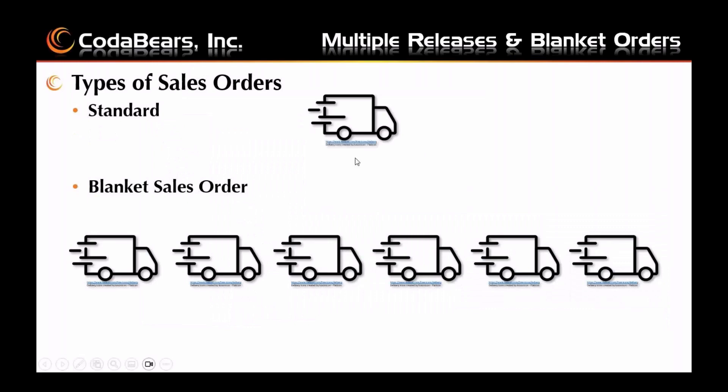This is a visual example of the different types of sales orders. A standard sales order is a purchase order for one or more products with usually a single release, but sometimes could have multiple releases per line. Usually shipments are all completed at one time or within a short period of time.